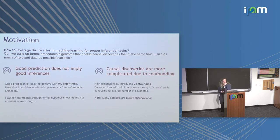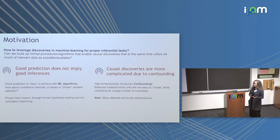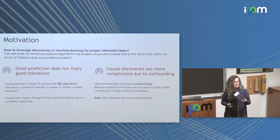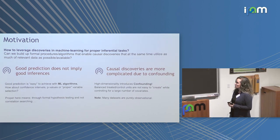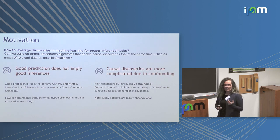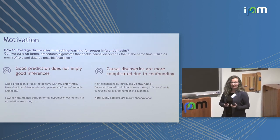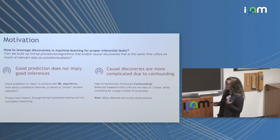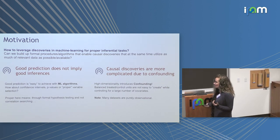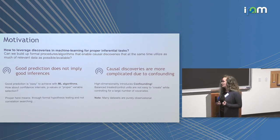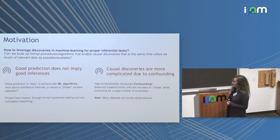The motivation for the talk is simple: how can we leverage discoveries in machine learning for proper inferential tasks? The word 'inferential' means hypothesis testing or confidence interval construction — statistical terminology. It doesn't just mean doing prediction. Good prediction does not imply good inference. Good prediction is easy for various ML algorithms; however, confidence intervals, p-values, and proper variable selection with theoretical guarantees are hard questions for machine learning techniques.